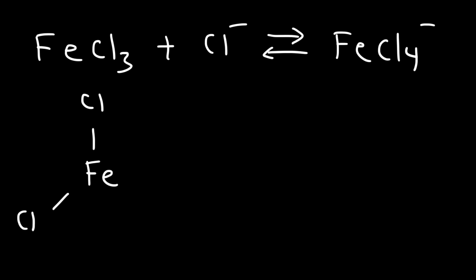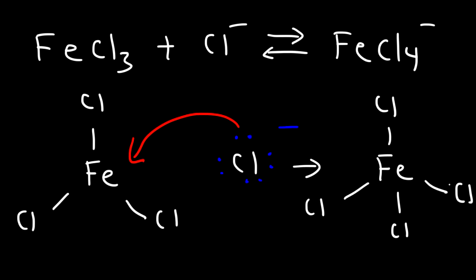FeCl3, like BF3, it has a trigonal planar shape. And this chloride has four lone pairs and a negative charge. It's going to attach itself to the Fe atom. And now you're going to get this. So now the iron atom has a negative formal charge.